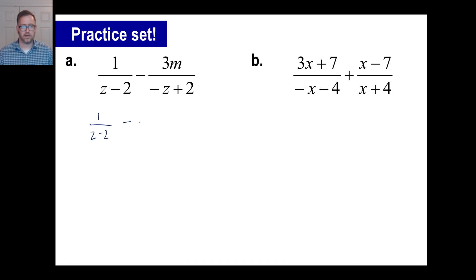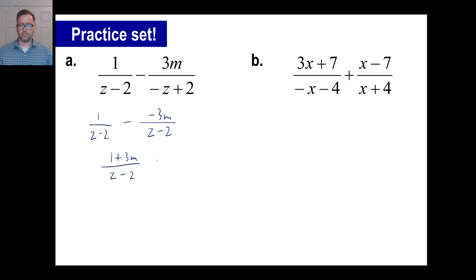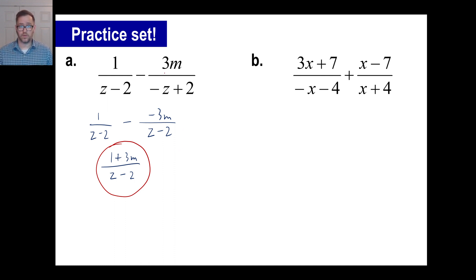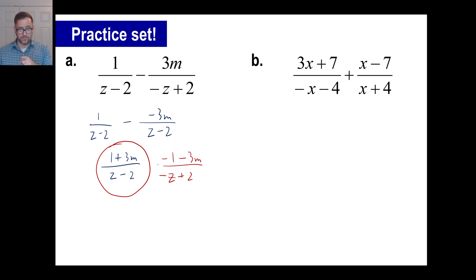Here is practice problem A. I'm going to subtract and change every single term: z minus 2, and then negative 3M turns into positive 3M, all over z minus 2. By the way, it's possible the back of the book might have a different-looking answer where every single term in the fraction is sign-flipped — numerator and denominator both changed. That's the same value, so you're fine.